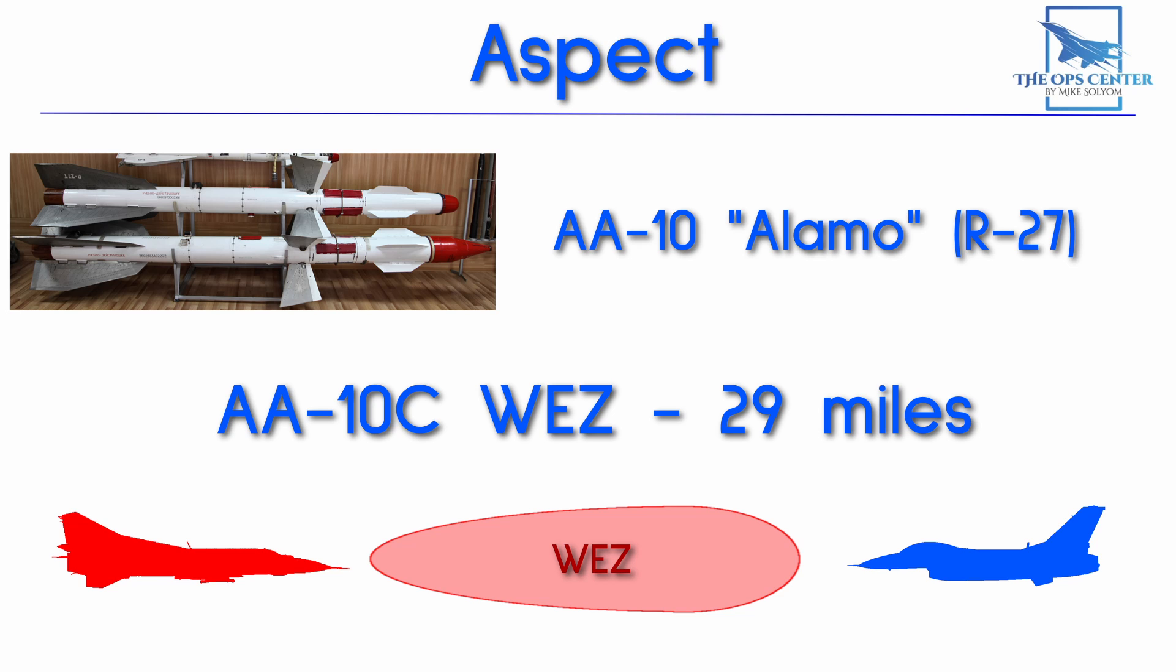This represents aspect, the first of our four A's, with higher aspect equating to a higher range. The takeaway here is that the probability of a kill goes down as a target turns away. But more importantly, the heart of the WEZ, where the kill probability is the highest, also shrinks.